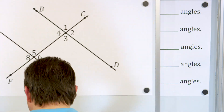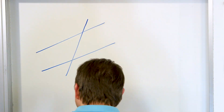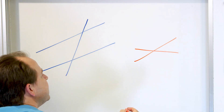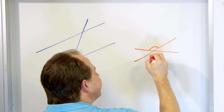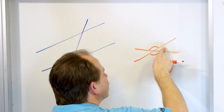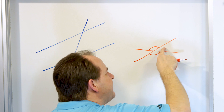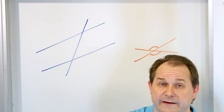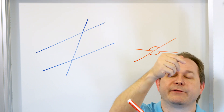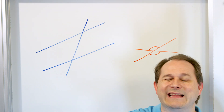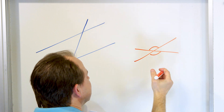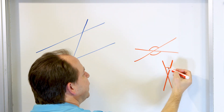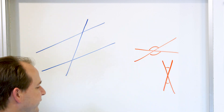To expand on that, if you draw any random two lines that cross, this angle is vertical with that one, and this one is vertical with that one. The angle measure is the same on each pair. Two angles are vertical if they're on the other side of an intersection, and they're always equal — even if you draw steep lines, the opposite angles are called vertical and they're also equal.